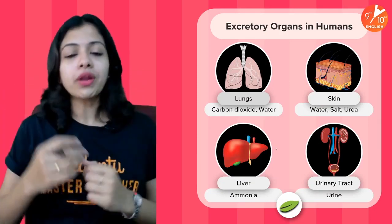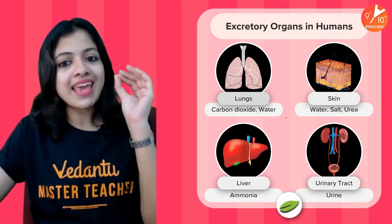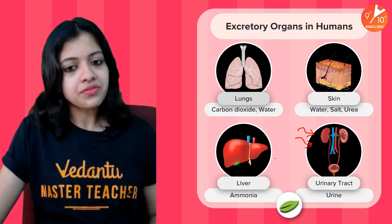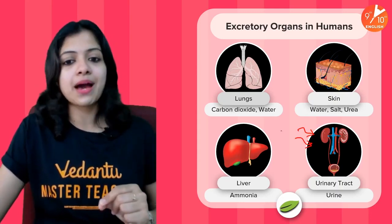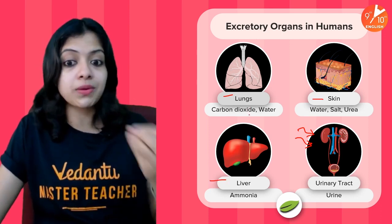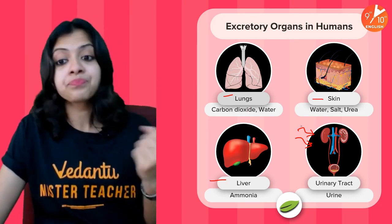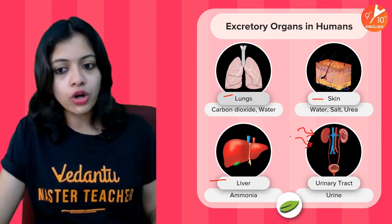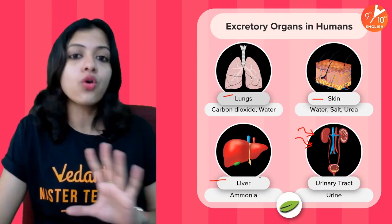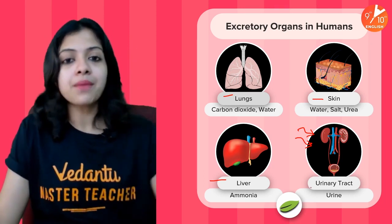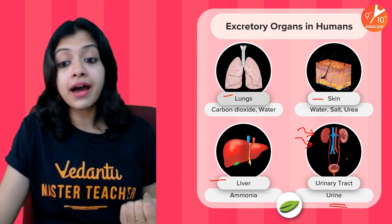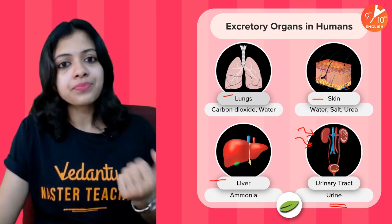Let us now understand more about excretory organs in human beings. The primary excretory organs are the kidneys — the urinary system. There are also accessory excretory organs: the lungs, which help in the elimination of carbon dioxide and some water; the skin, which helps eliminate water, salts and some urea; and the liver, which helps in the elimination of ammonia. But the primary excretory product in human beings is urine, made by the kidneys.